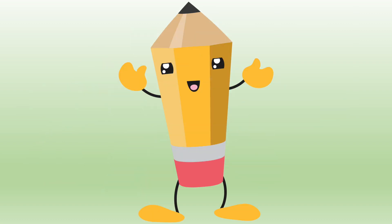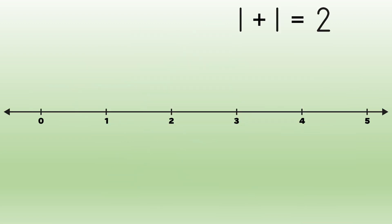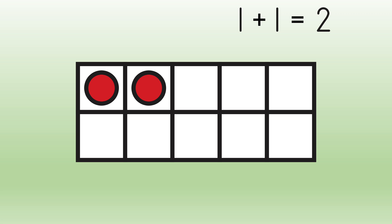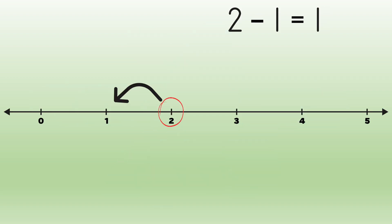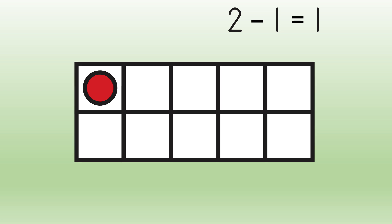But he wanted to see what these number sentences look like when we use some of our math tools. With a number line, it looks like this when we add: one plus one equals two. With a tens frame, it looks like this: one plus one equals two. And with tally marks, it looks like this: one plus one equals two. Now when we subtract, our number line looks this way: two minus one equals one. On a tens frame, it looks like this: two minus one equals one. And when we use tally marks, it looks like this: two minus one equals one.